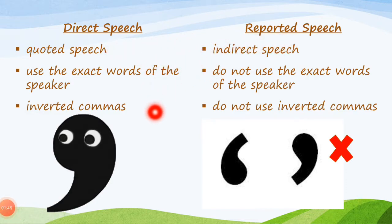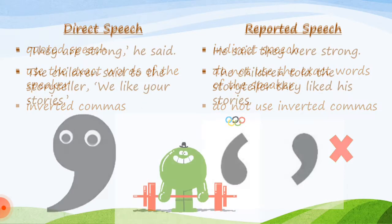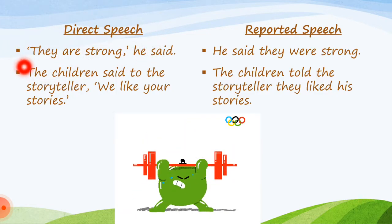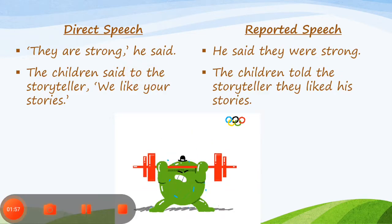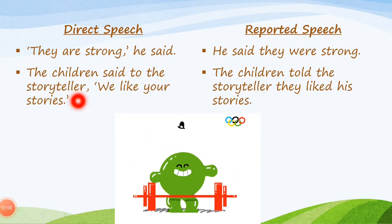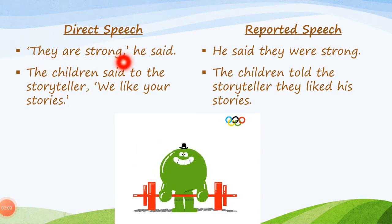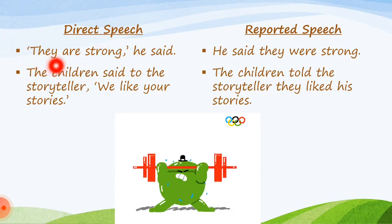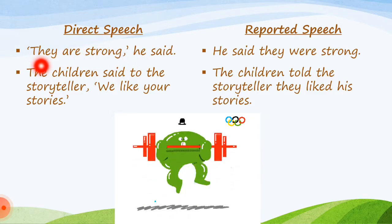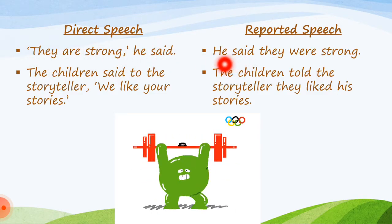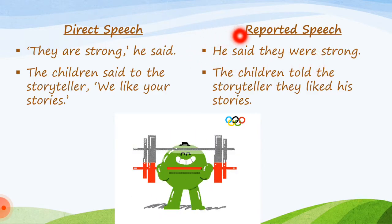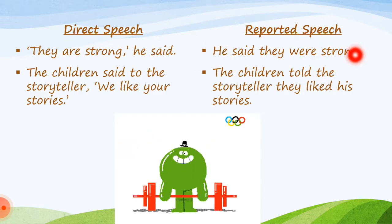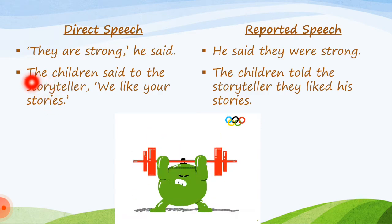Direct speech and reported speech will be clear when we look at the examples. The first example of direct speech is: 'They are strong,' he said. As you can see, we are using inverted commas and the exact words of the speaker. In reported speech this becomes: he said they were strong — no inverted commas, and the exact words of the speaker are not used.